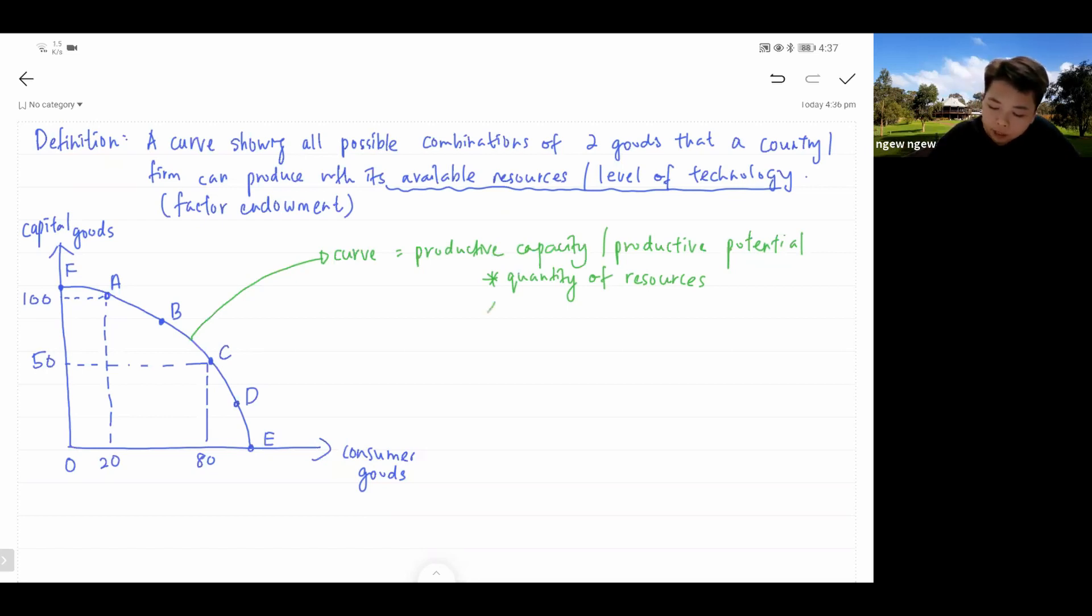Secondly, it is also constrained by your quality of resources. Maybe the skill of your labor - although you have only 10 laborers, but all your laborers are very productive and efficient, then you will be able to produce more of both goods. And likewise, although you have only 10 machines, but your machines are advanced, highly productive machines, then you can produce more of both goods as well. That is the first thing that you need to understand while trying to do PPC.